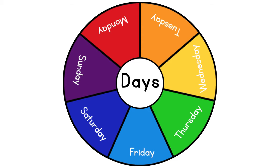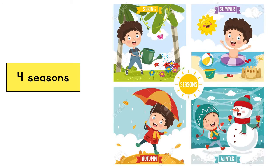Now let us look at the 4 seasons. There are 4 seasons around the world, which are spring, summer, winter, and autumn. Spring — musim bunga. Summer — musim panas. Winter — musim sejuk. And autumn — musim luruh.